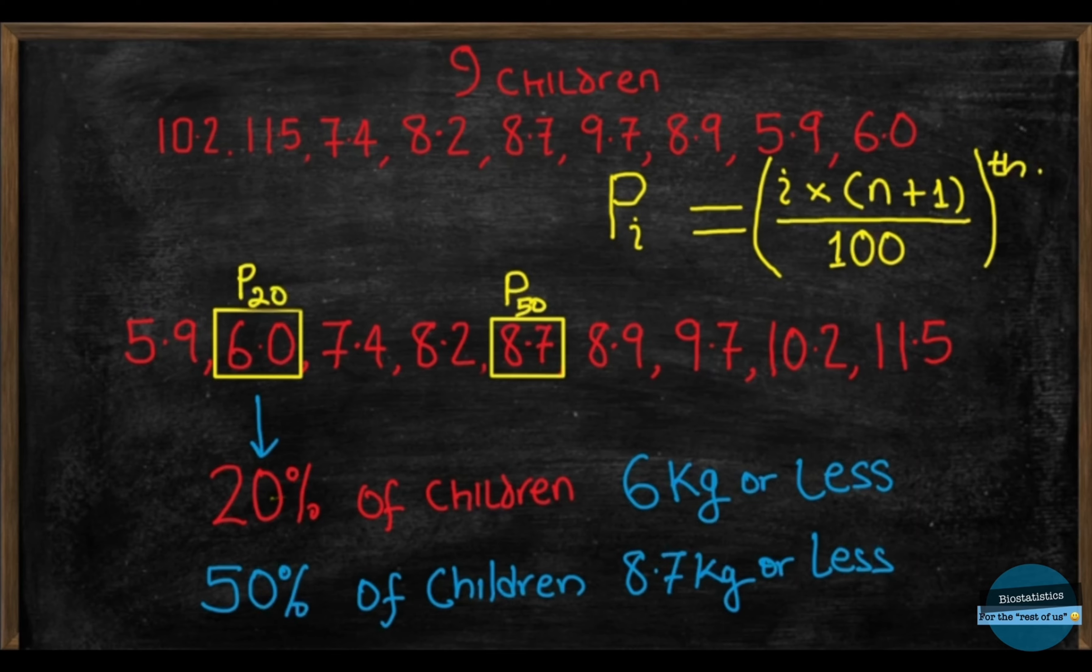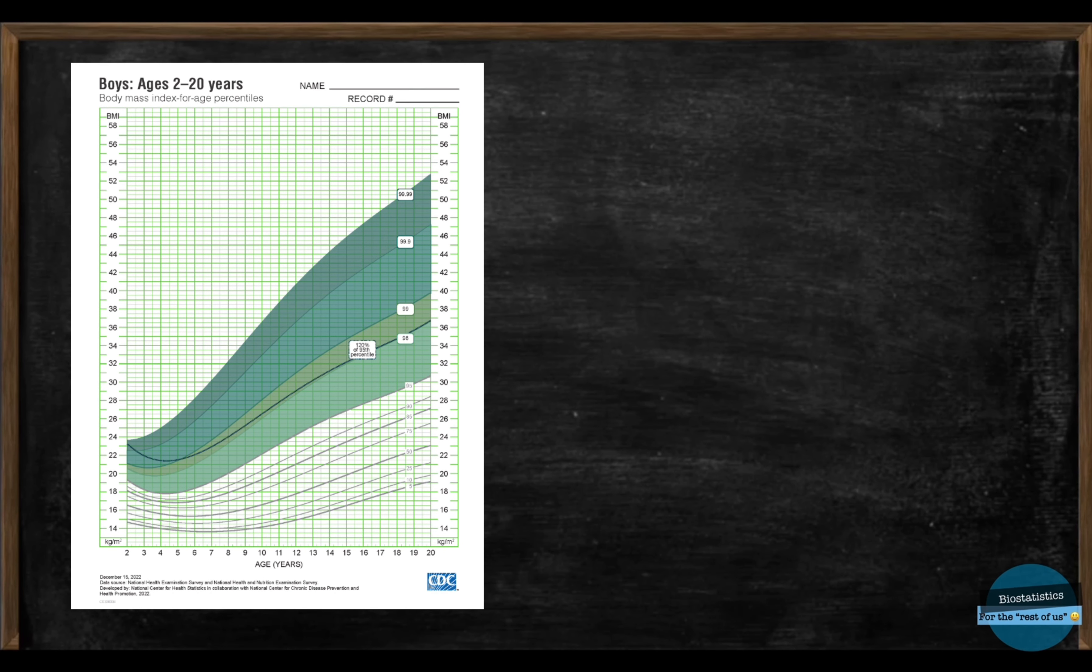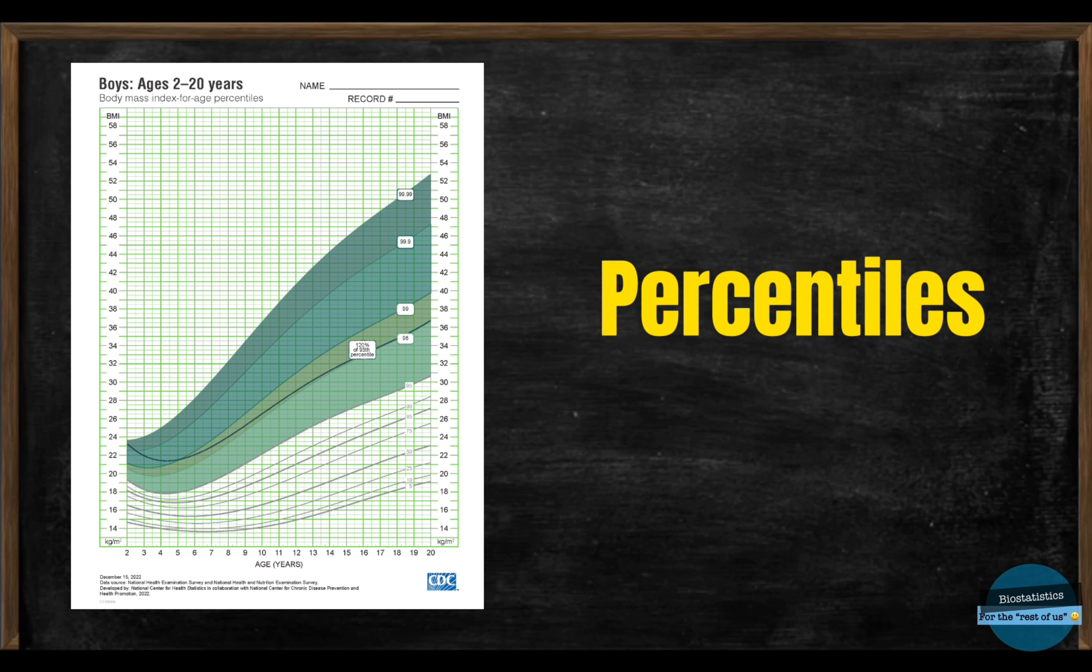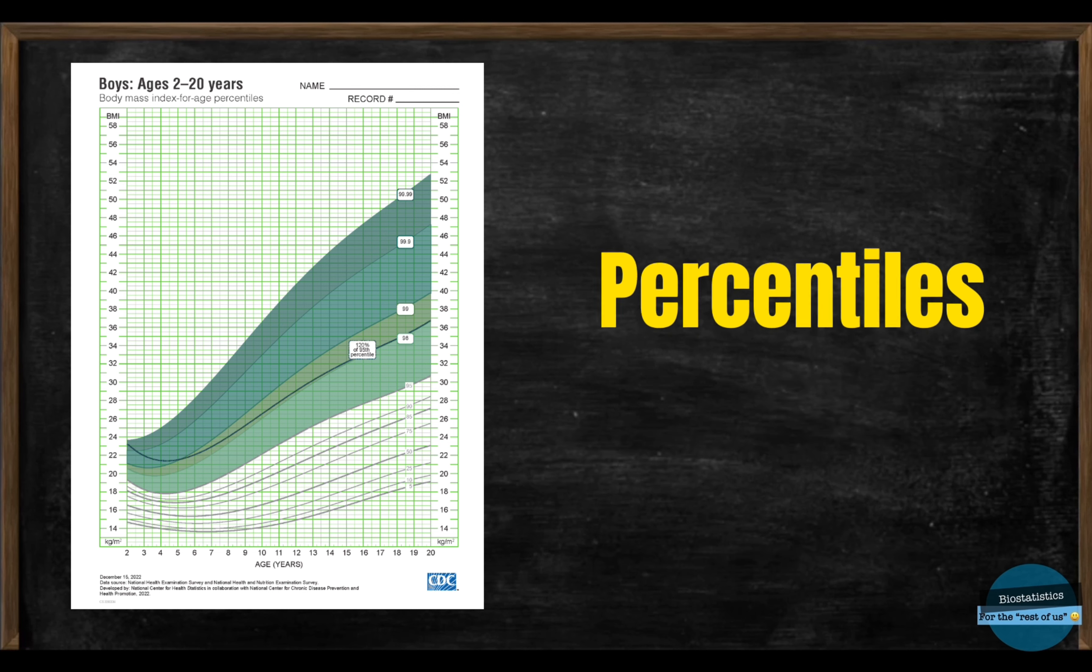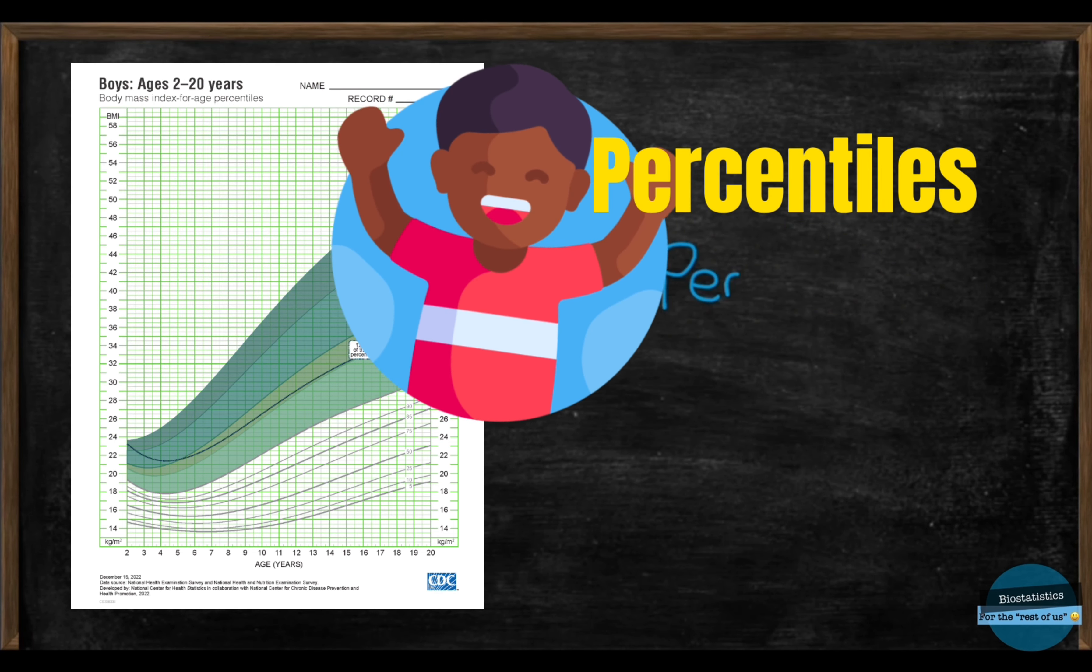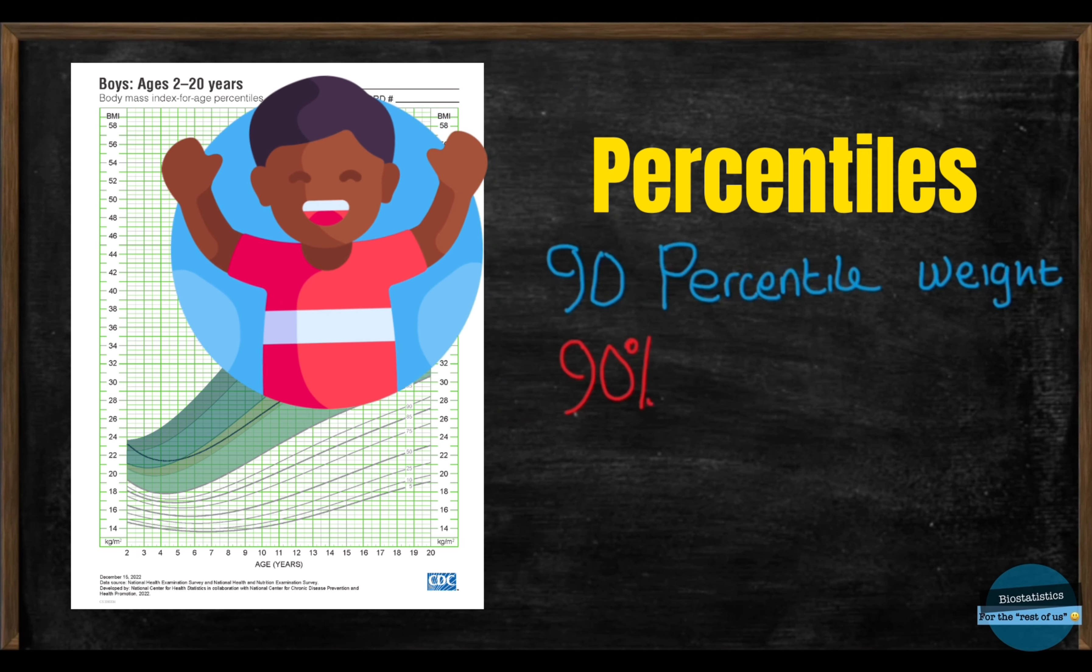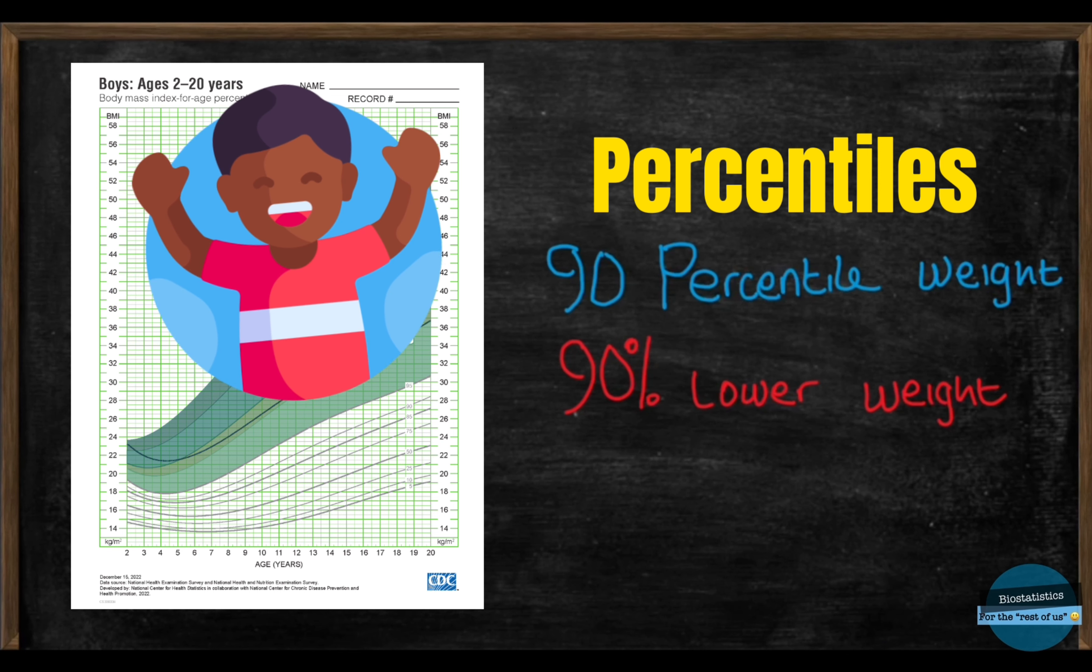Let's talk briefly about how this is also useful in public health. The CDC's growth charts are an example of percentiles used in public health data. These charts use percentiles to show how a child's measurement such as weight, height and head circumference compared to other children of the same age and sex. So, like the example of the child I gave at the beginning of this video, if the child is in the 90th percentile for weight, it means 90% of the children of the same age and sex have a lower weight than that child.